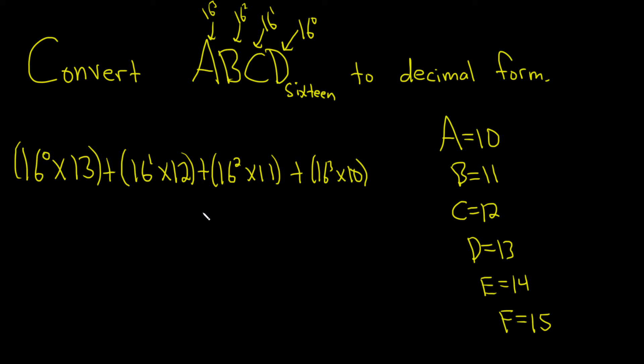Okay? So let's work this out carefully. So 16 to the 0 is 1, and 1 times 13 is 13, plus, 16 times 12 is 192, plus.